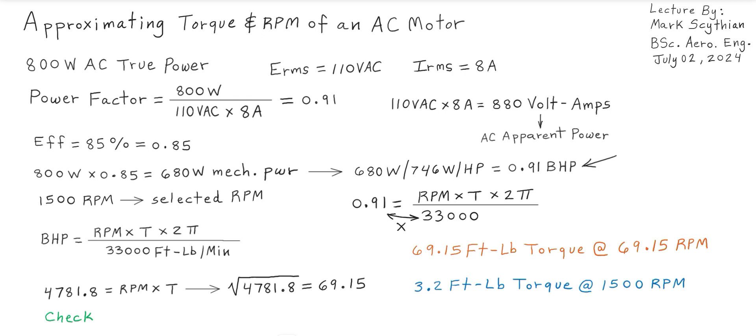So we can check this just to make sure it is accurate. 1500 RPM times 3.2 foot-pounds torque times 2π divided into 33,000. We get 0.91 BHP verified, which is correct.